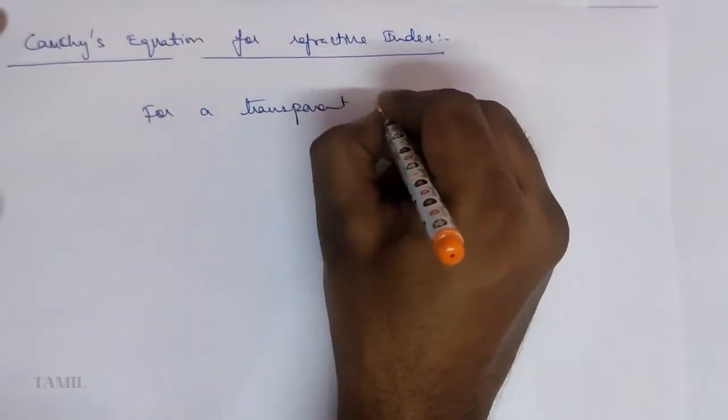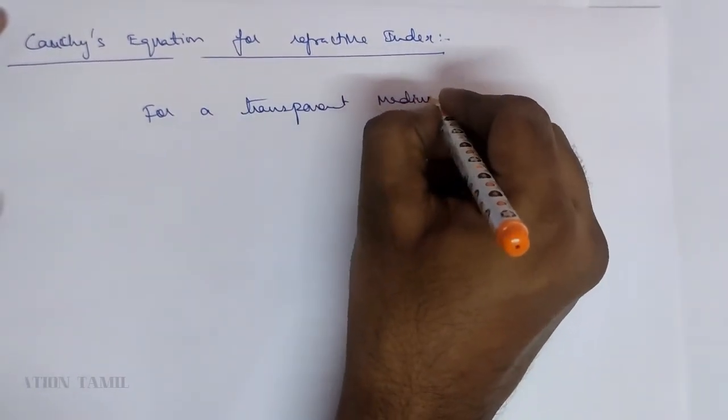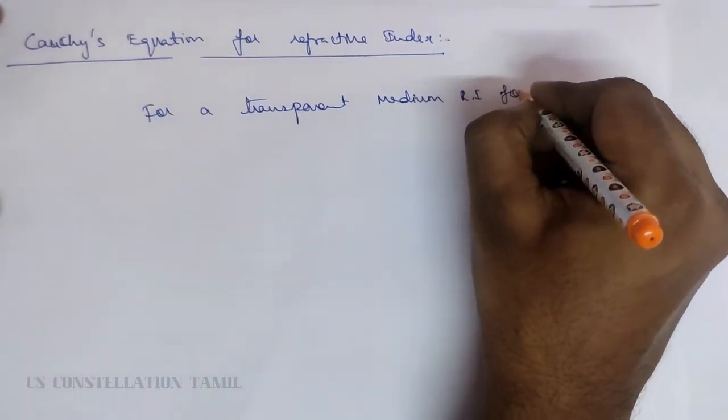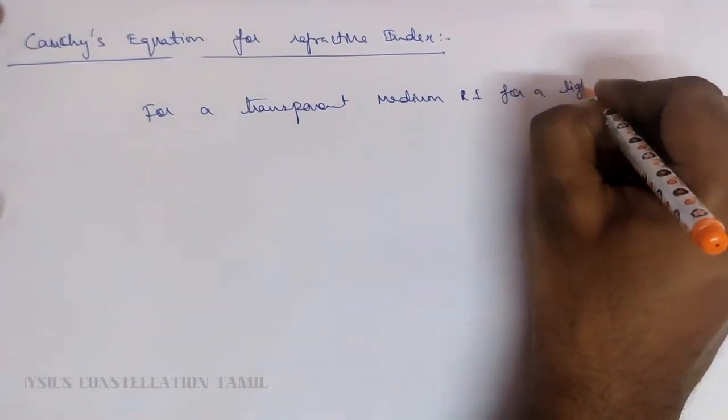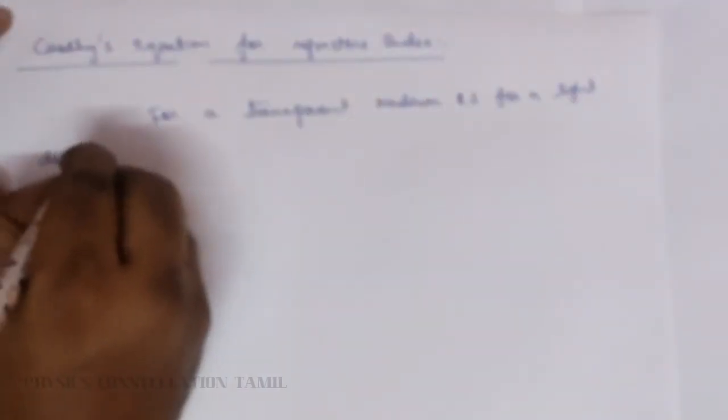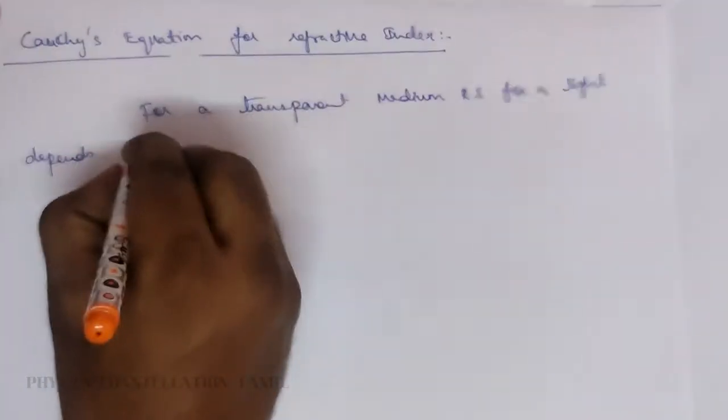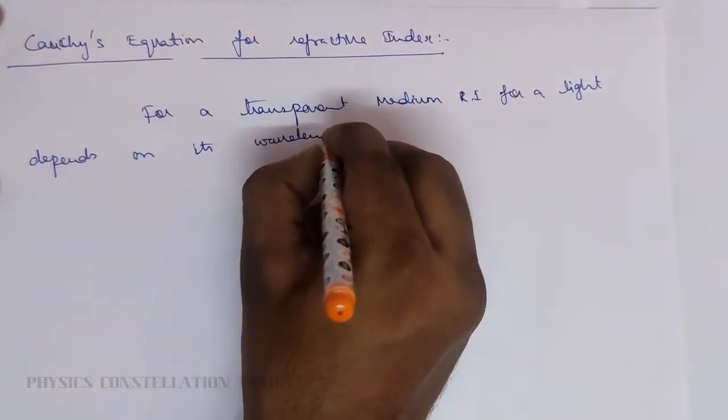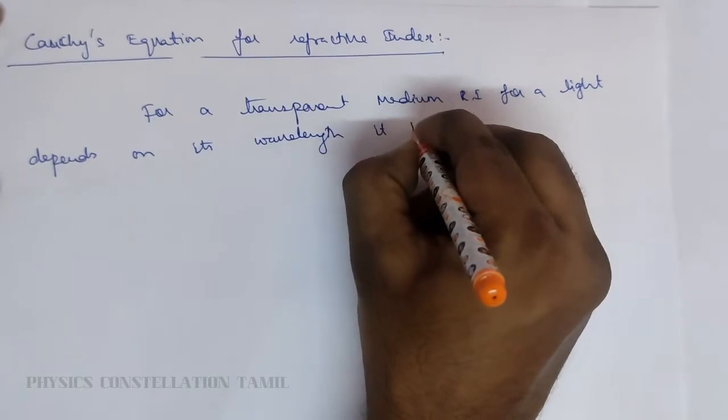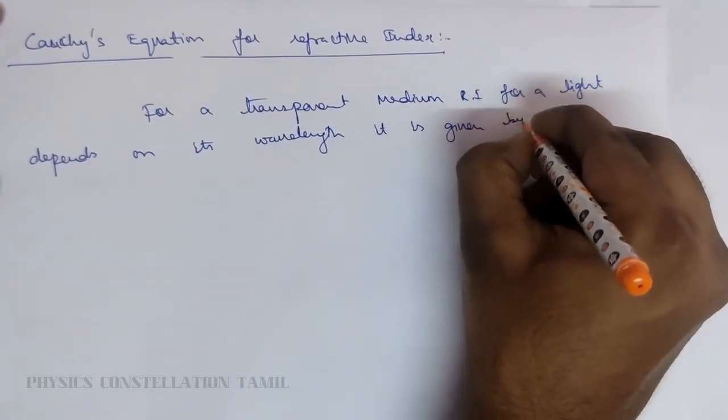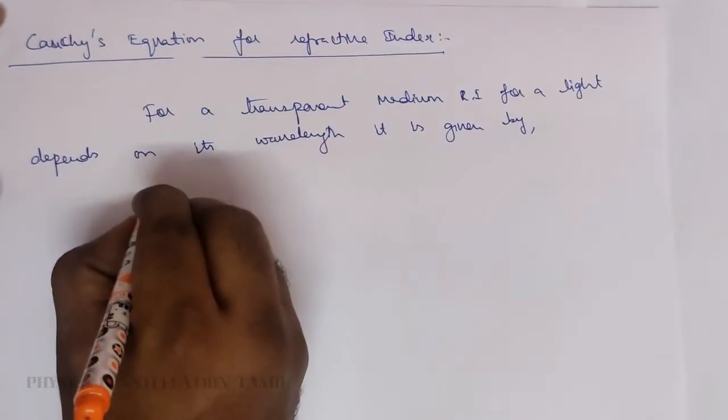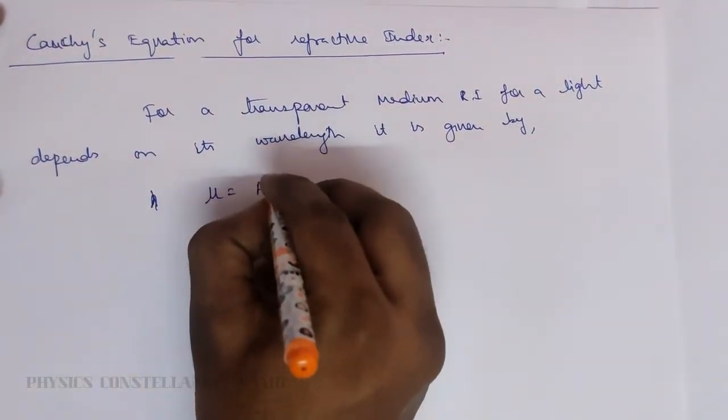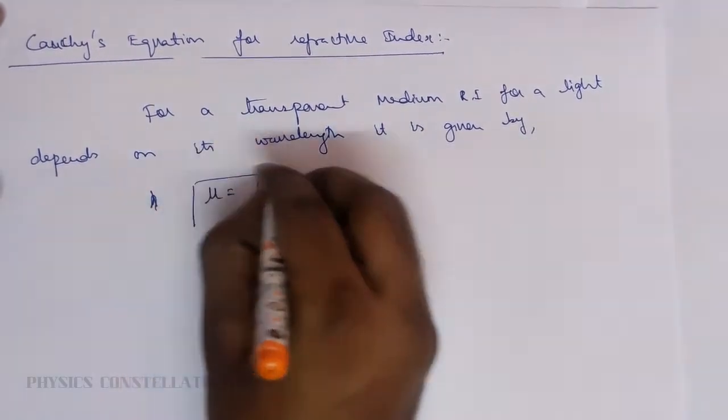For a transparent medium, refractive index for a light depends on its wavelength. It is given by lambda mu would be equal to, that is refractive index μ = A + B/λ².